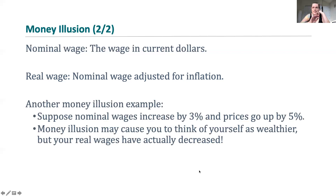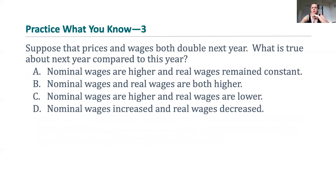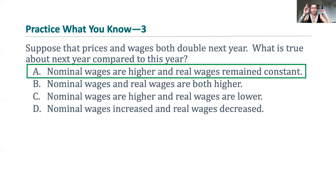Here's another money illusion example. Let's say nominal wages go up by 3%, but prices go up by 5%. Money illusion might make you believe you're wealthier because you see a bigger number in your bank account. You actually are making more money this year, but your real wage has decreased because prices went up faster than your wage did — your purchasing power has gone down. If prices and wages both double, your nominal wage is higher, but your real wage has stayed the same because your wage and price level increased by the same amount. Think of real wages as purchasing power.